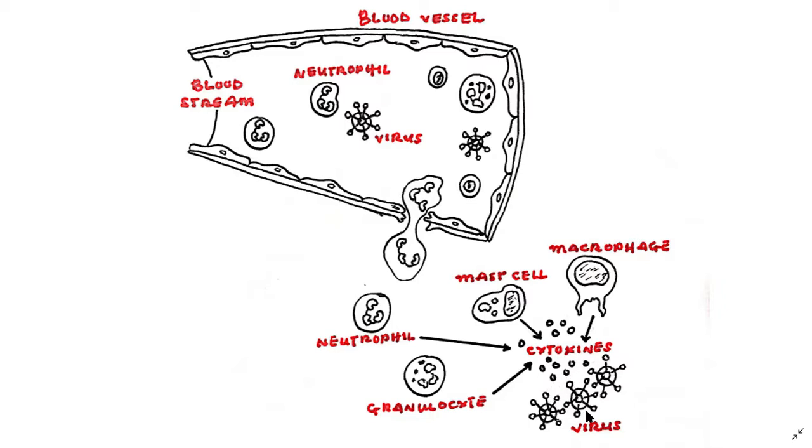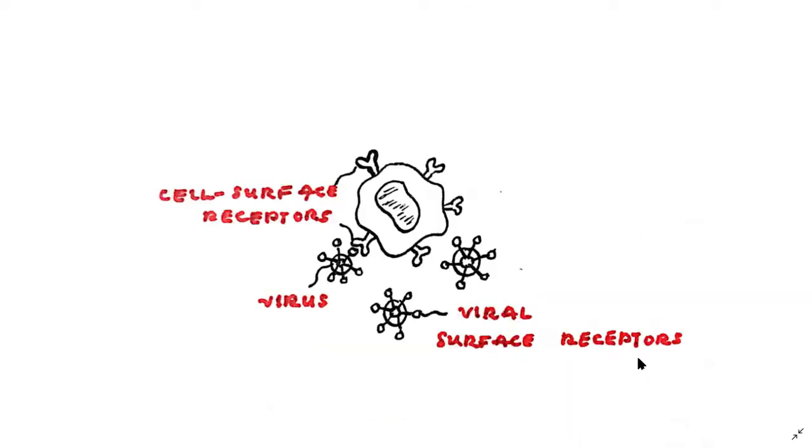Cytokines signal cells to move to a certain area in the body where the microbe, in this case the virus, is found. The virus then binds to the cell surface receptors of the macrophage. The macrophage will not initiate phagocytosis without successful binding of the cell surface receptors.